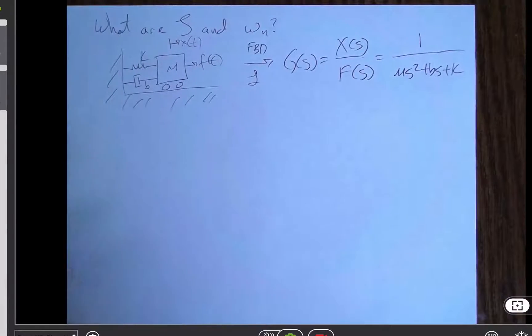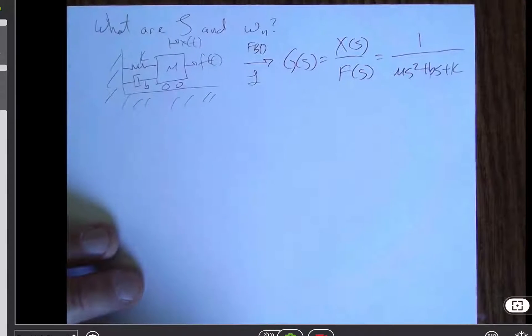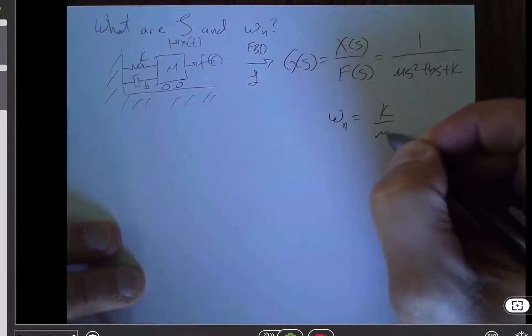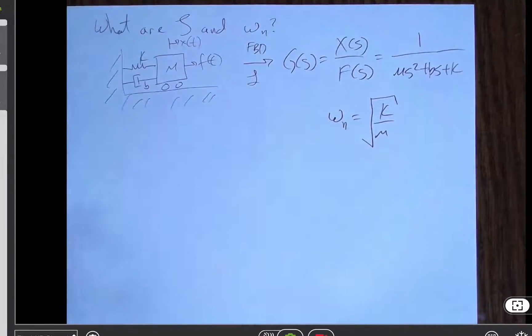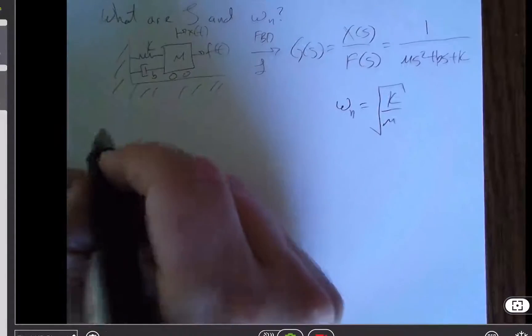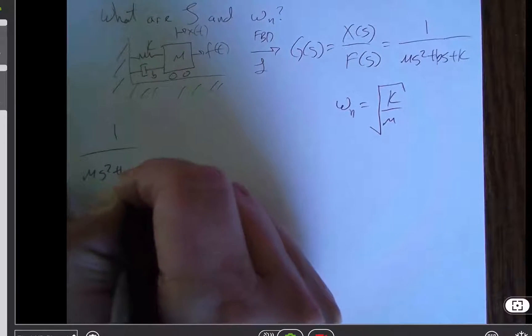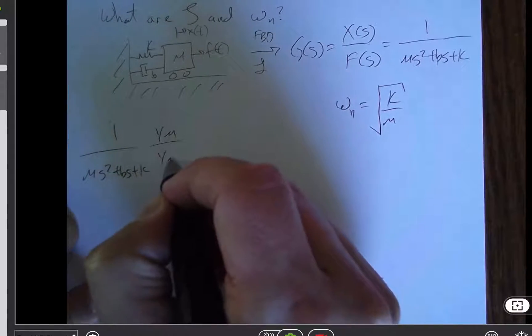Hopefully, you remember from physics that stiffness by itself or mass by itself, not super relevant in determining the natural frequency, but it turns out that omega n is actually the square root of k over m. And so similarly, my claim is that if we took this 1 over ms squared plus bs plus k and multiplied through by 1 over m divided by 1 over m,